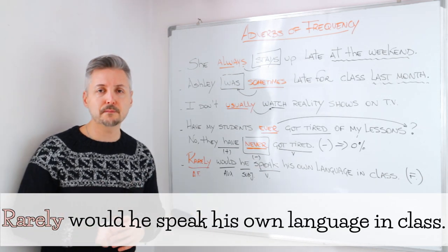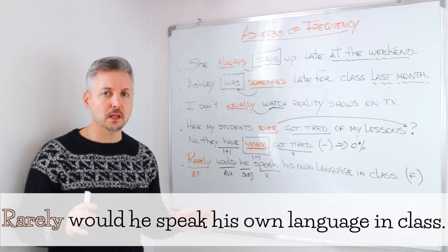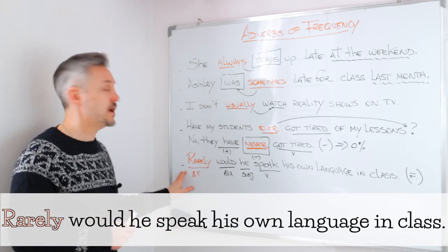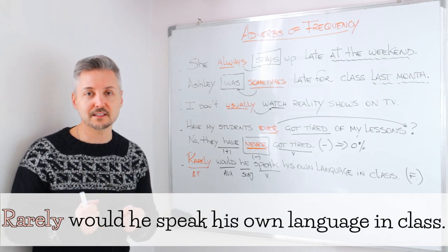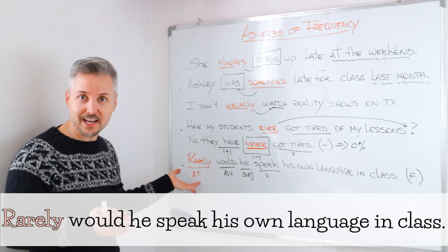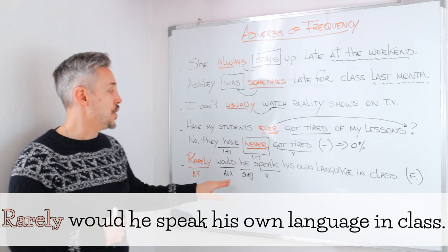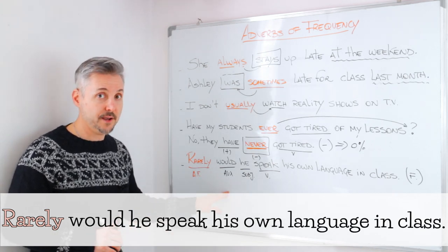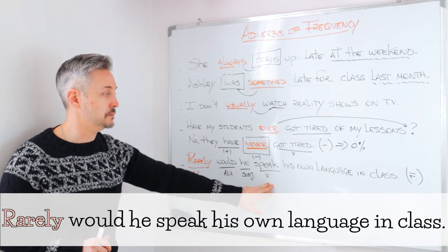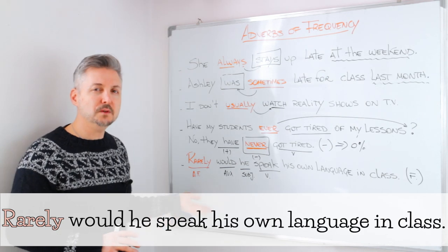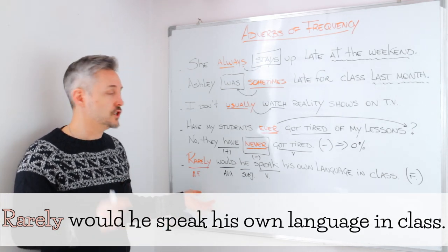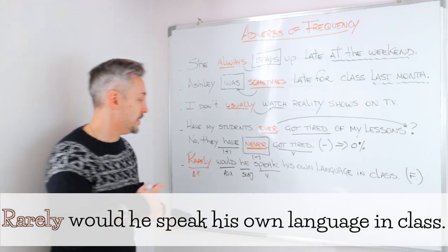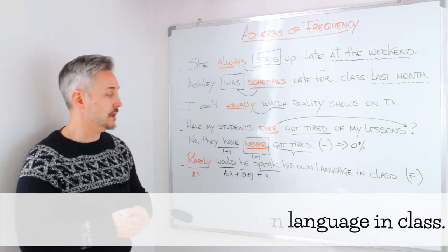Now let's take a look at the last example. This may sound a little weird because it's a formal context: 'Rarely would he speak his own language in class.' We use the adverb of frequency before anything else to stress the meaning. 'Rarely' is the adverb of frequency, then 'would' is the auxiliary, then 'he' is the subject, then the verb 'speak his own language in class.' You will see this in a very formal context — adverb of frequency first, then auxiliary, plus subject, plus main verb.